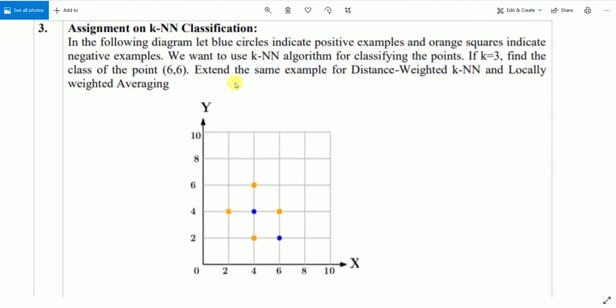So if we consider the point (6,6) which will lie over here, and they have given us the value of k, that is equal to 3. If we consider the value of k as 3 and we want to use k-nearest neighbor algorithm, then we have our sample data point as (6,6). We can easily identify that three nearest neighbors to this particular point will be this, this, and this. So it will be (6,4), (4,4), and (4,6). So these three will be the nearest neighbors for this particular data point, that is (6,6).